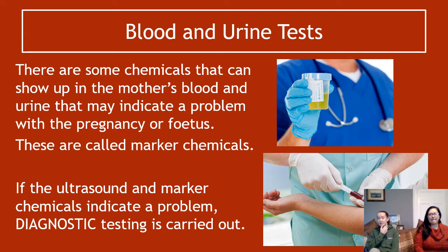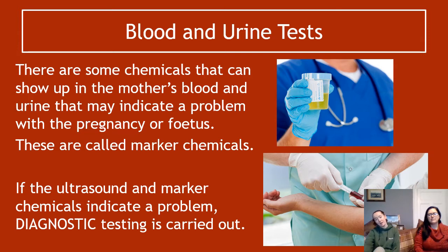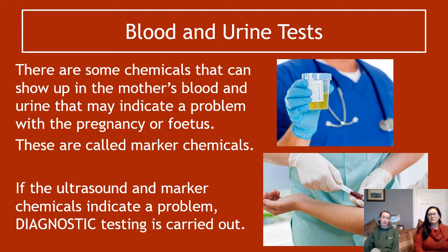Blood and urine tests show us if certain chemicals show up in the mother's blood that might indicate a certain problem. If there is an issue with how the baby is forming, sometimes different chemicals are produced that can be present in the mother's urine. These are called marker chemicals — they basically tell us something is not quite right — and if they are present alongside ultrasound issues, that indicates some kind of problem and diagnostic testing would be carried out.